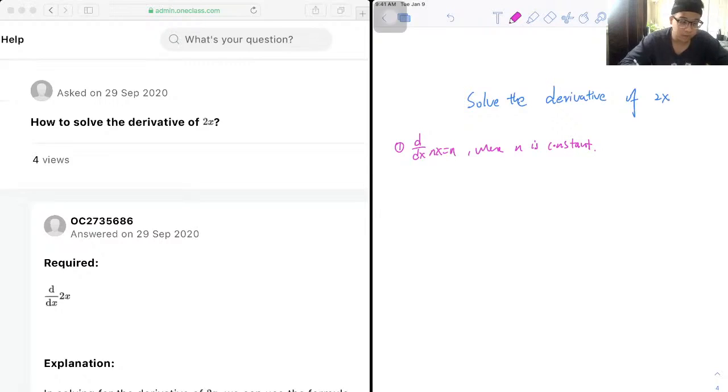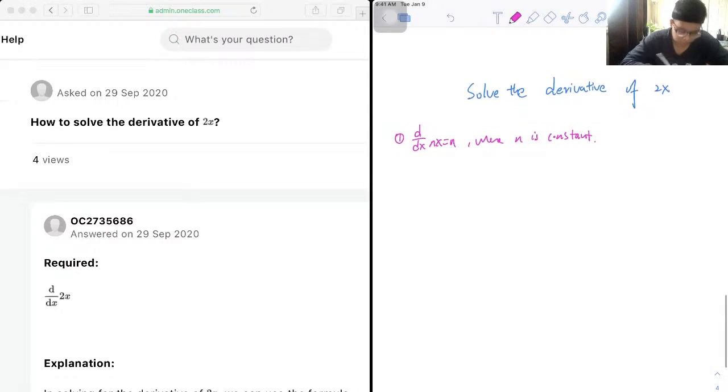So applying this formula to the given, we have d/dx of 2x, which is just going to be equal to the coefficient of x, which is 2.